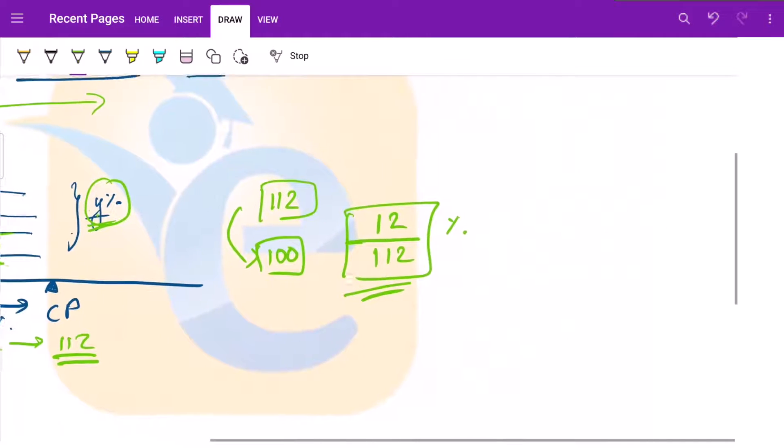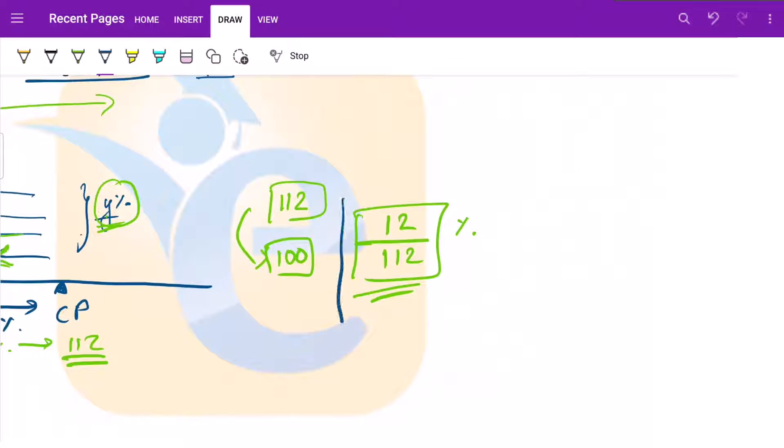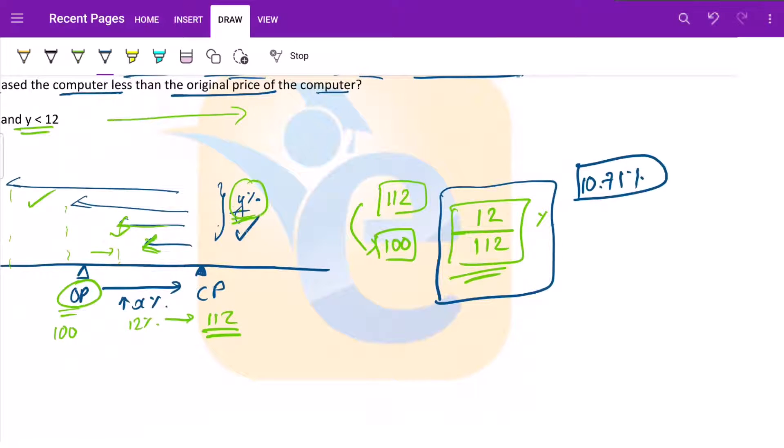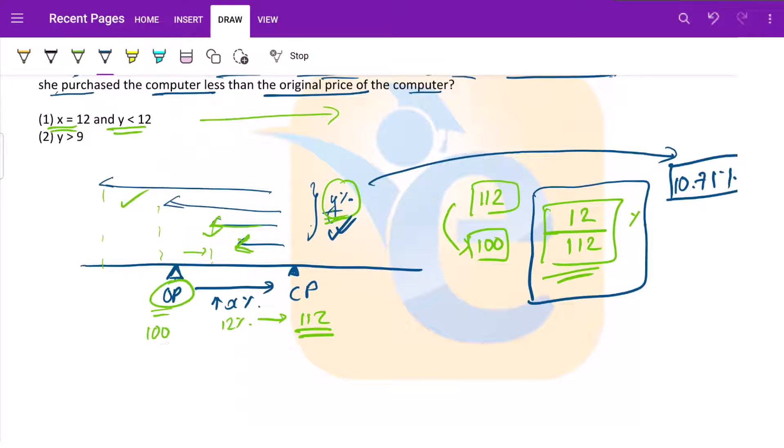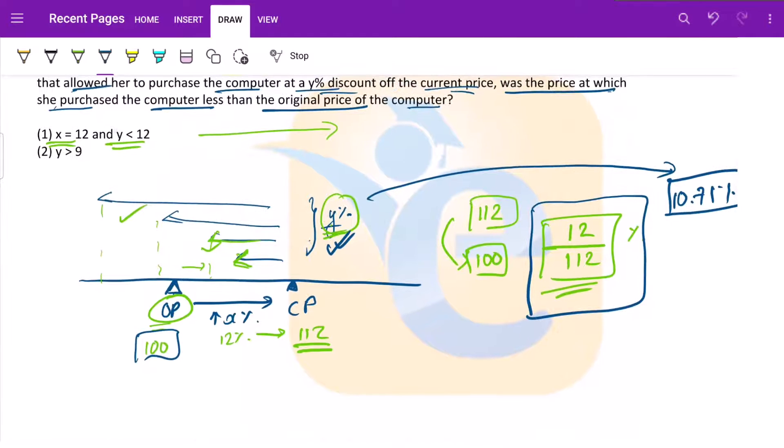There's a decrease of 12 on 112. So what percentage is this? Now what I would suggest here, do not try to solve this in your mind. Just open your calculator in a very super fast and efficient manner and do this thing. You'll get the value of 10.71 percent. So if you decrease, if the discount is of 10.71 percent, then we are exactly back at 100.